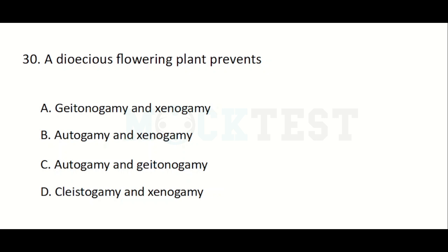In a dioecious flowering plant, which types of pollination are possible? Option A: Geitonogamy and xenogamy, Option B: Autogamy and xenogamy, Option C: Autogamy and cleistogamy, Option D: Cleistogamy and xenogamy. The answer is Xenogamy only — autogamy and geitonogamy are not possible in dioecious plants.